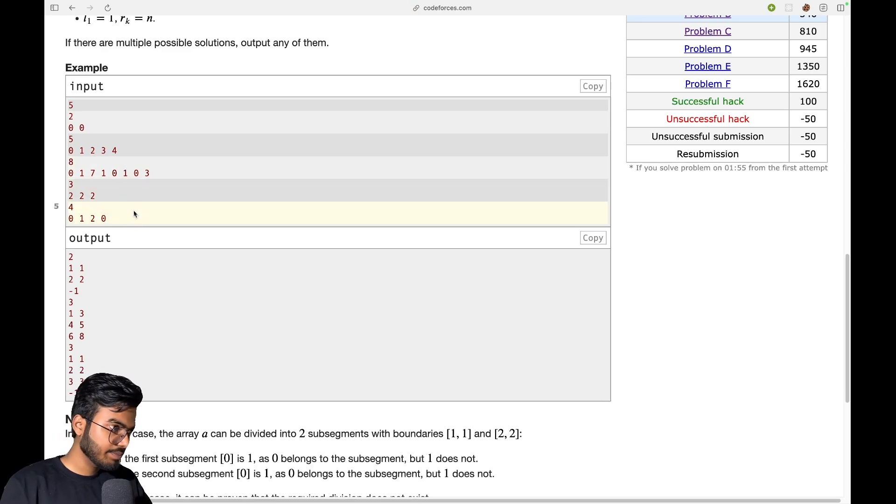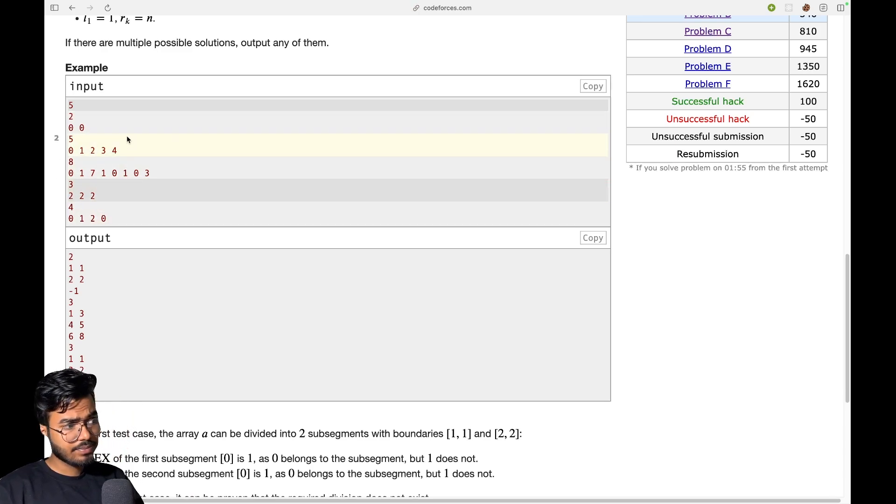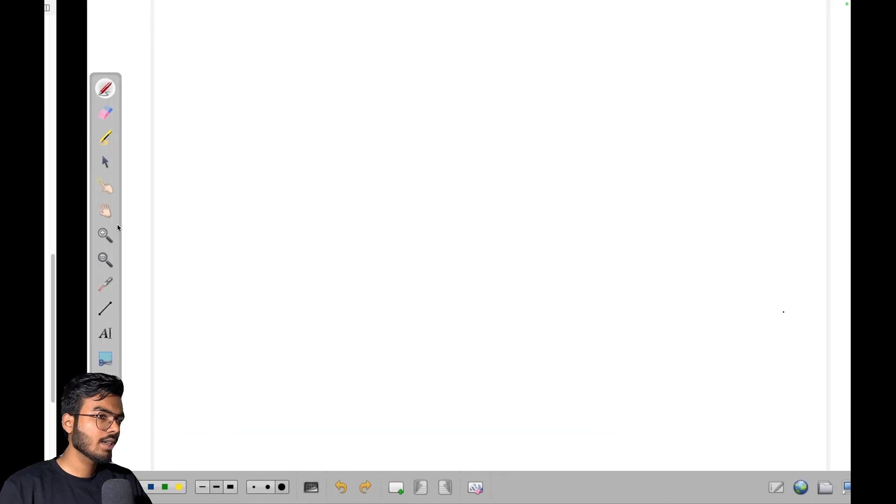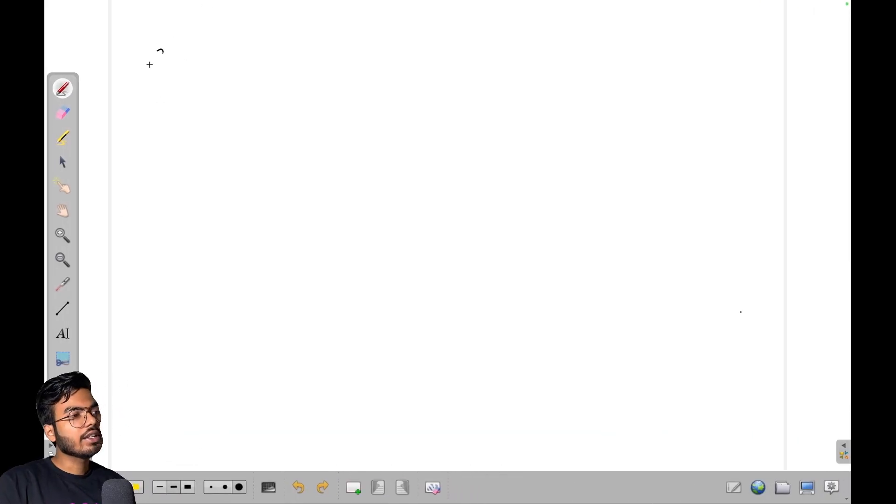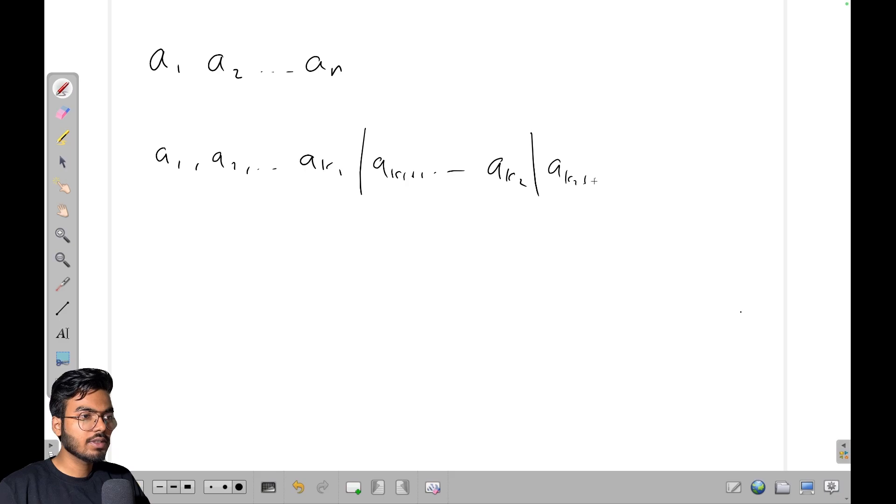So how can we do this? Let's see. Suppose we have an array, so my array looks like a1, a2 till aN, right? And we want to divide it. Let's say we have some divisions, so first we have a1, a2 till k1, then we have k1+1 till k2, and then we have from k2+1 till k3.